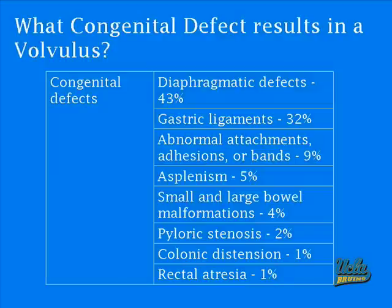What congenital defects result in volvulus? From the chart here, defects regarding the diaphragm and gastric ligaments make up 75% of all Type 2 gastric volvulus cases. This emphasizes that volvulus is indeed a defect regarding the abdomen and chest cavity, but other defects — some not located in the stomach — serve to show that gastric volvulus may be onset by defects beyond the stomach or chest.